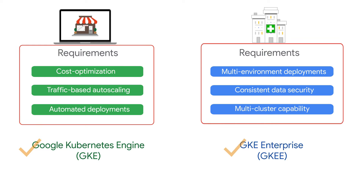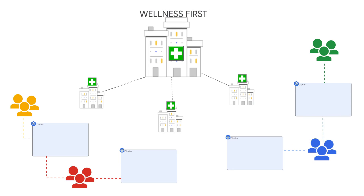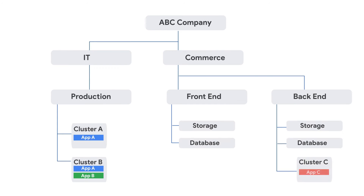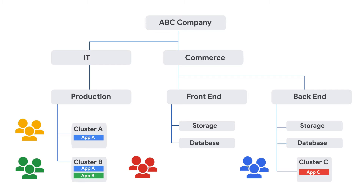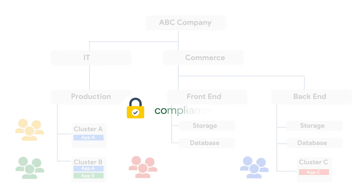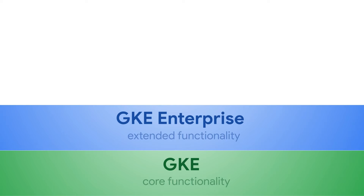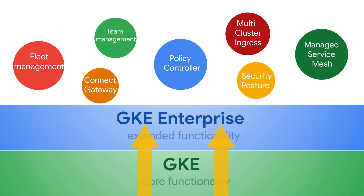On the other hand, GKE Enterprise is a good fit for Wellness First. They have more complex organizational needs and require access to enterprise-grade features. You can think of GKE Enterprise as another layer on top of GKE. It's designed for organizations that need to manage complex workloads with multiple clusters and teams, and that require a high level of security, compliance, and governance. And it offers all this with a robust console experience. GKE Enterprise goes beyond the capabilities of standard GKE and provides a range of advanced features that address the critical needs of businesses operating at scale.